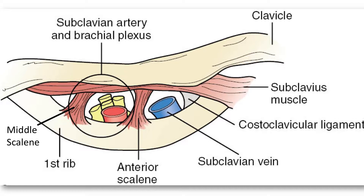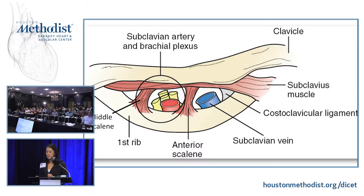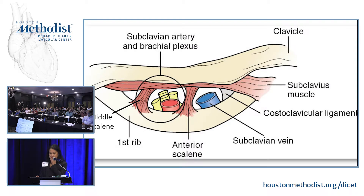The clavicle lies on top. Importantly, the anterior scalene divides the subclavian vein in front of it and the subclavian artery behind it. The middle scalene is behind the nerve bundle and behind the artery. Below the clavicle is the subclavian muscle, and the costoclavicular ligament is another important structure. For venous TOS, compression is caused by the costoclavicular ligament being too lateral, hypertrophy of the anterior scalene, or hypertrophy of the subclavius muscle.